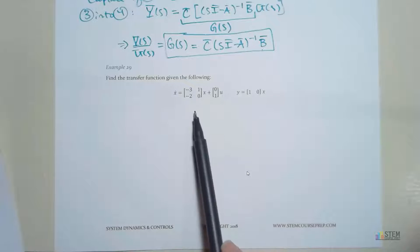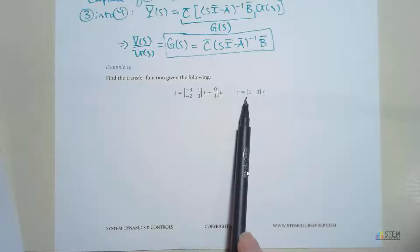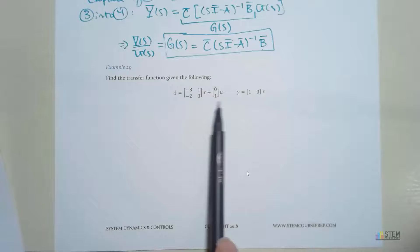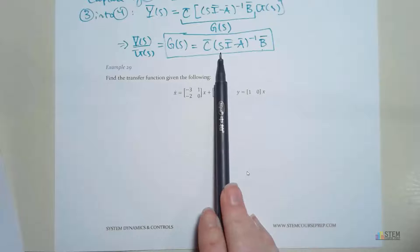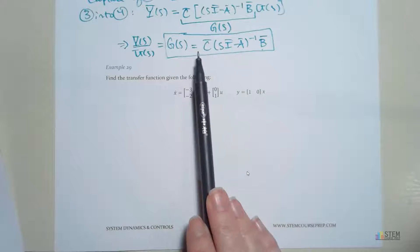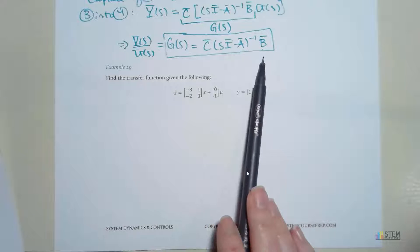What we've got here is the state-space representation for some system, and here is our output equation. So that's what we're given. What we want to do is find the transfer function for this system. This is the equation we developed to do that: g(s) is going to equal c times (sI minus A) inverse times b.